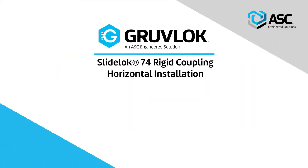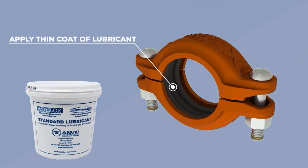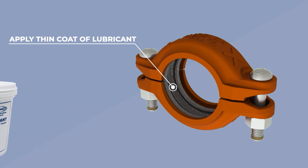SlideLock 74 Rigid Coupling Horizontal Installation. Apply a thin coat of lubricant to the exposed surfaces of the gasket. Be careful that foreign particles do not adhere to the lubricated surfaces.